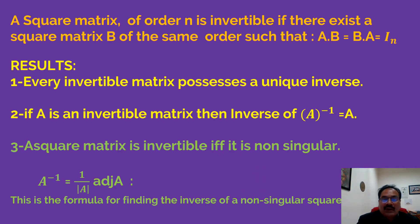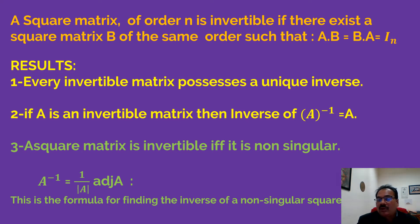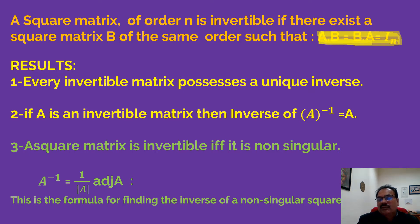A square matrix of order n is invertible if there exists a square matrix B of the same order such that A·B = B·A = identity matrix. If you multiply two square matrices and you get the identity matrix, then we can find the inverse of the matrix — so we can say the inverse matrix exists.